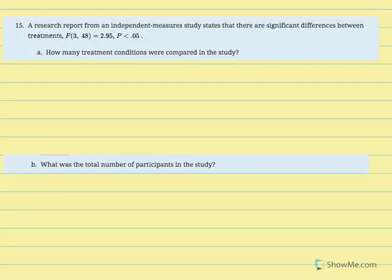Number 15 stresses the relationship between variables, particularly calculations for degrees of freedom. A research report from an independent measures study states that there are significant differences between treatments: analysis of variance was conducted with numerator DF equal to 3, denominator DF equal to 48, F ratio equal to 2.95, and probability less than alpha — showing significance.